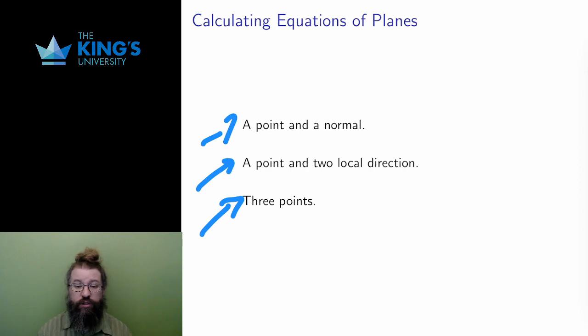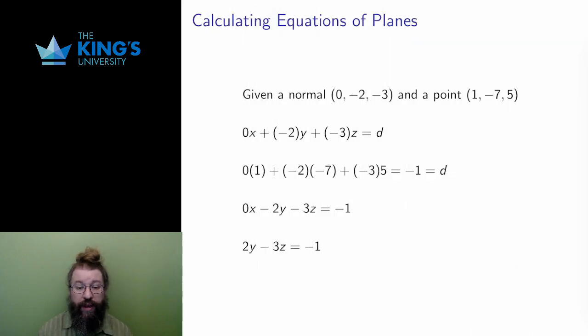Here's how it works starting with a point and a normal, and I'll demonstrate by example. Say I know the normal is 0, negative 2, negative 3, and that 1, negative 7, 5 is a point on the plane.